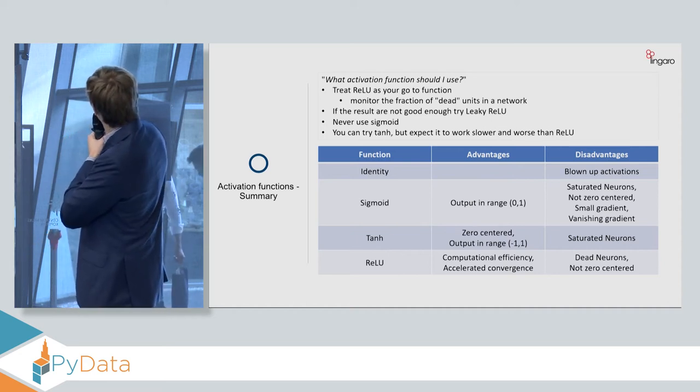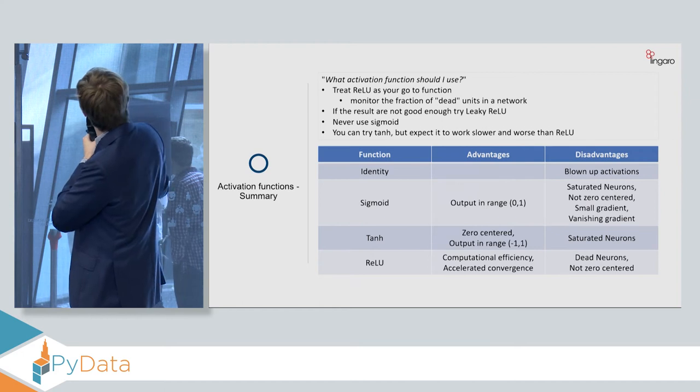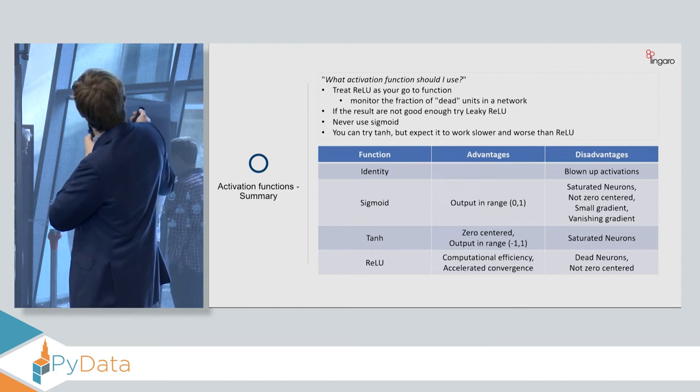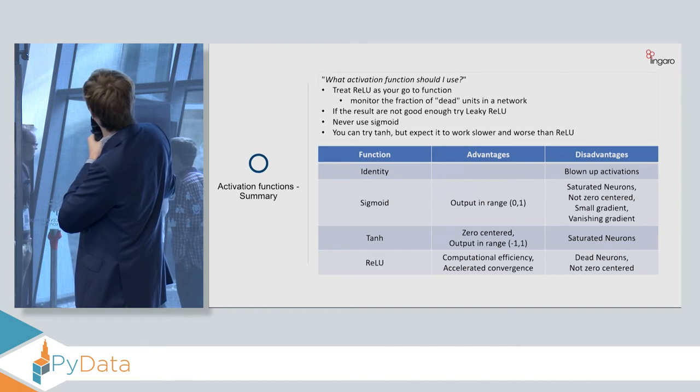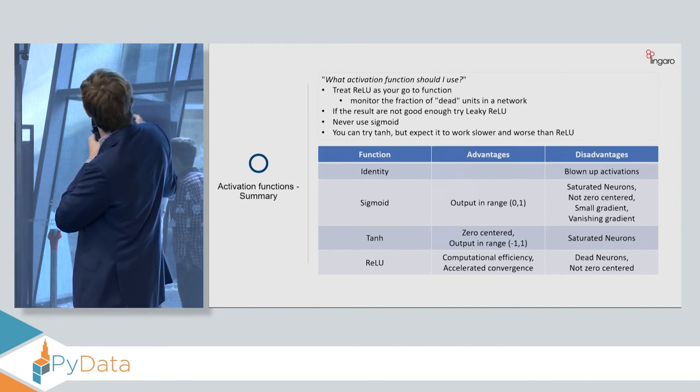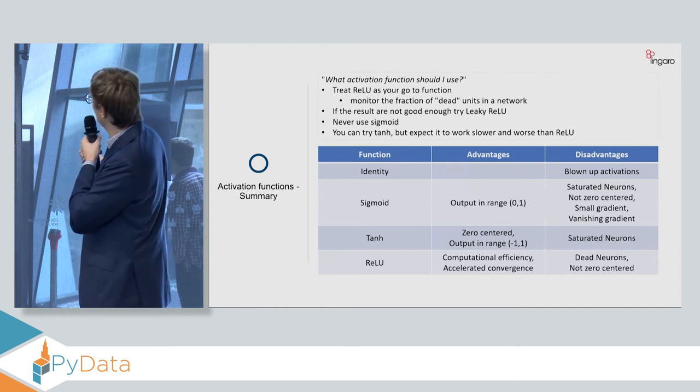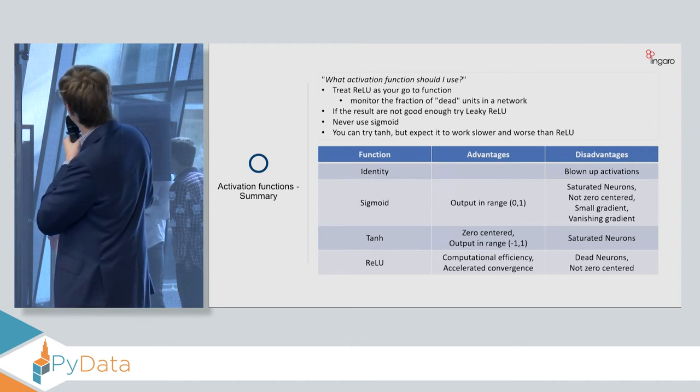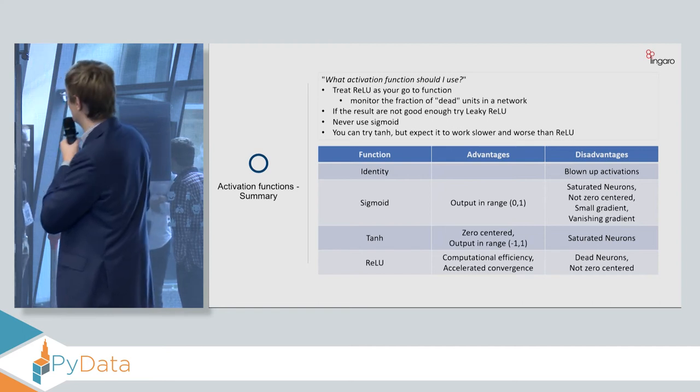And hyperbolic tangent is an alternative. It sometimes can perform better, but most of the cases, the rectified linear unit is the one you should go for. Again, comparing all the things I said about neural networks and the activation functions in one place. So sigmoid, saturated neurons, not-zero-center, small gradient and vanishing gradient problem. The hyperbolic tangent resolves the issue of not-zero-centered data, and it has a nice range of the output, but it still suffers from the saturated neurons problem. And the rectified linear unit, computational efficiency, accelerated convergence, but still dead neurons and not zero-centered.